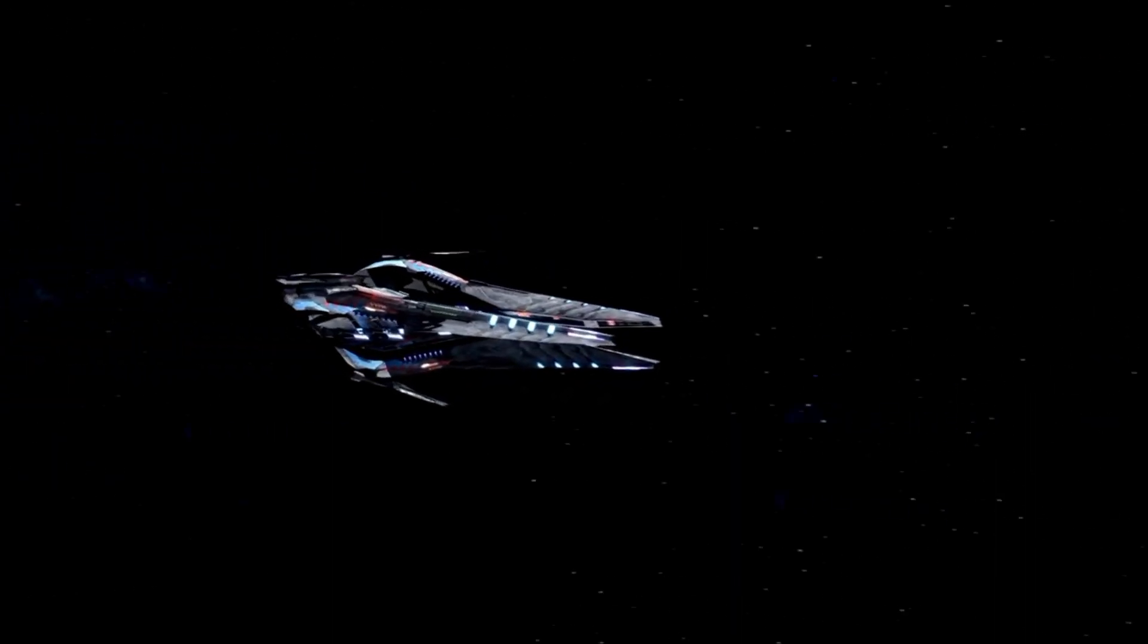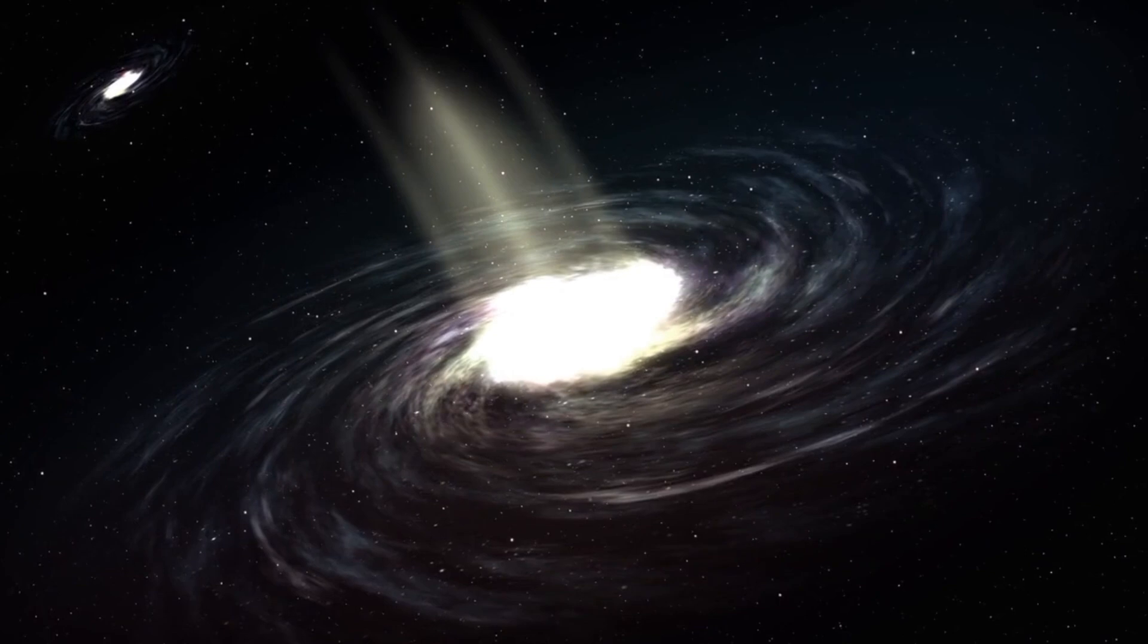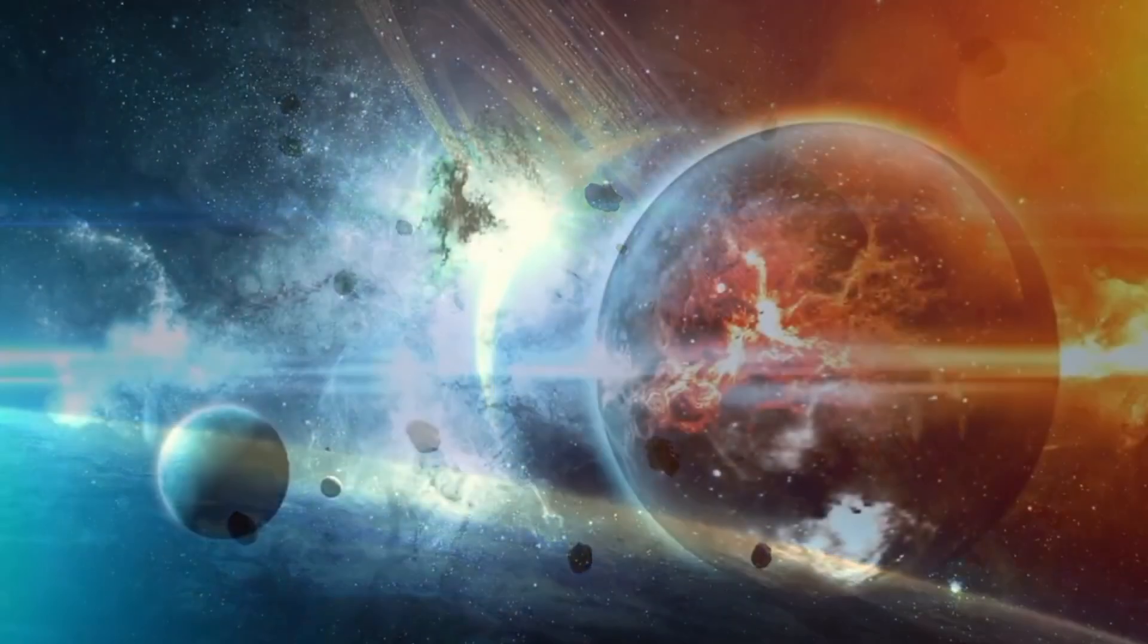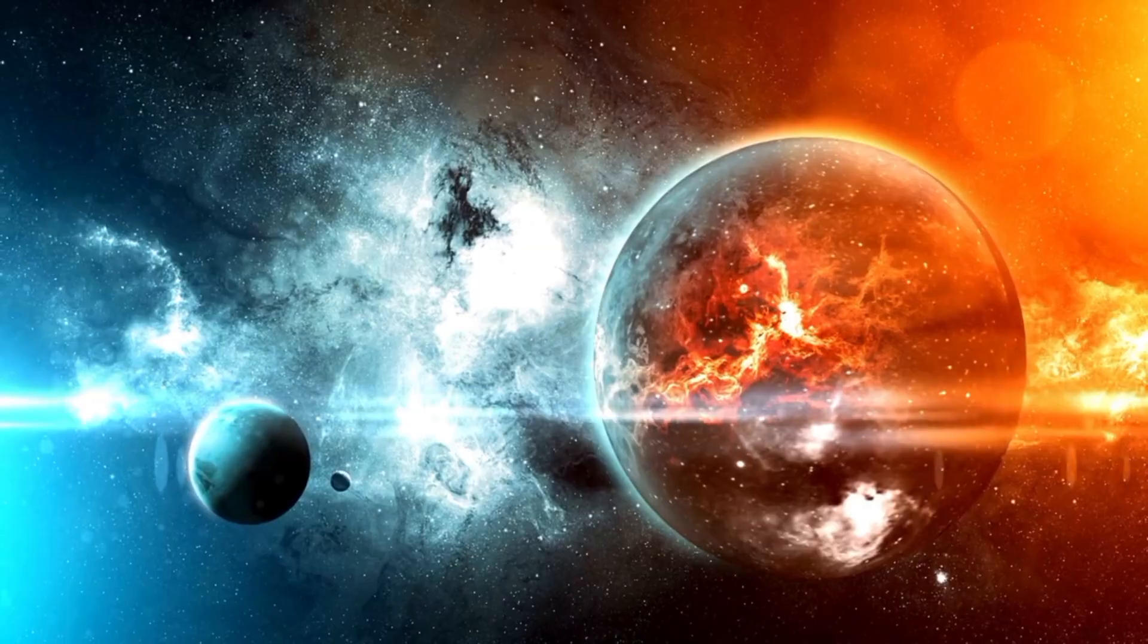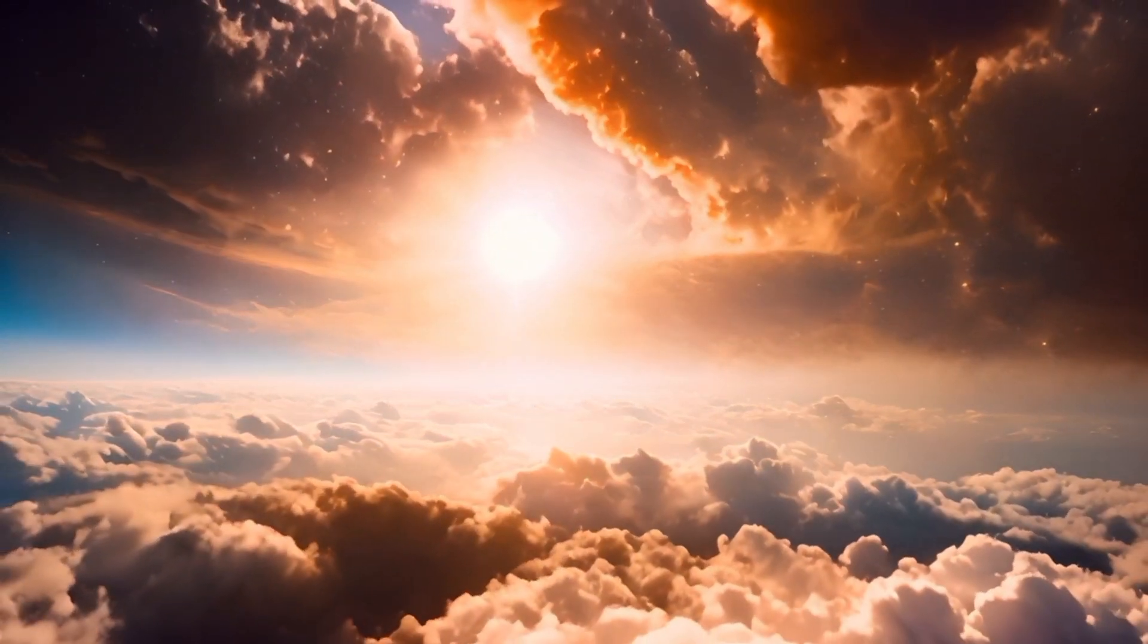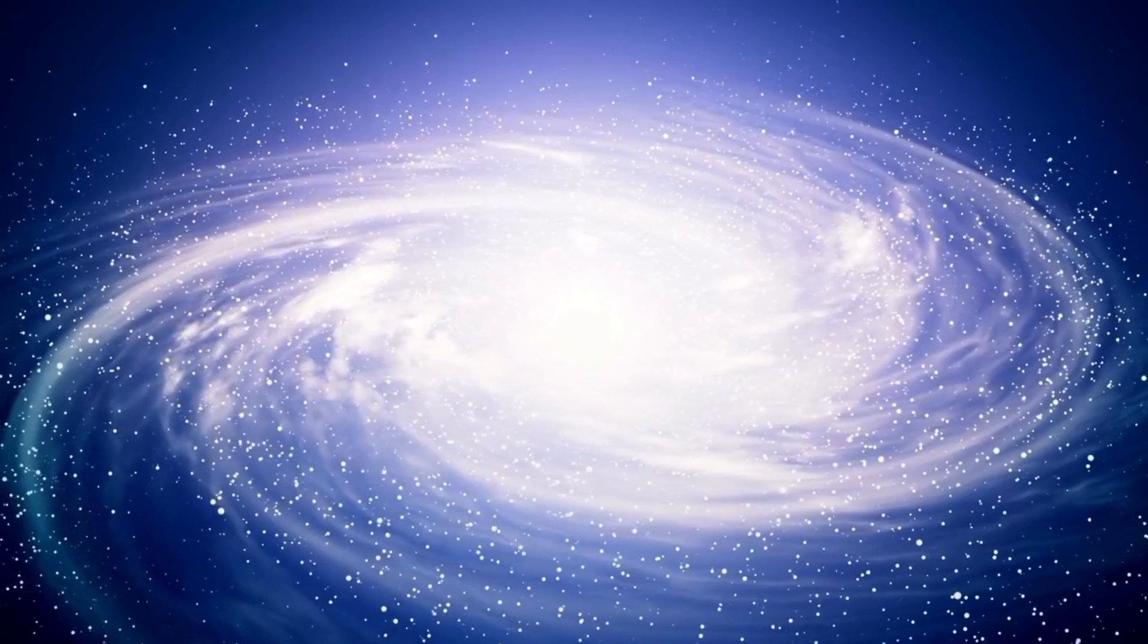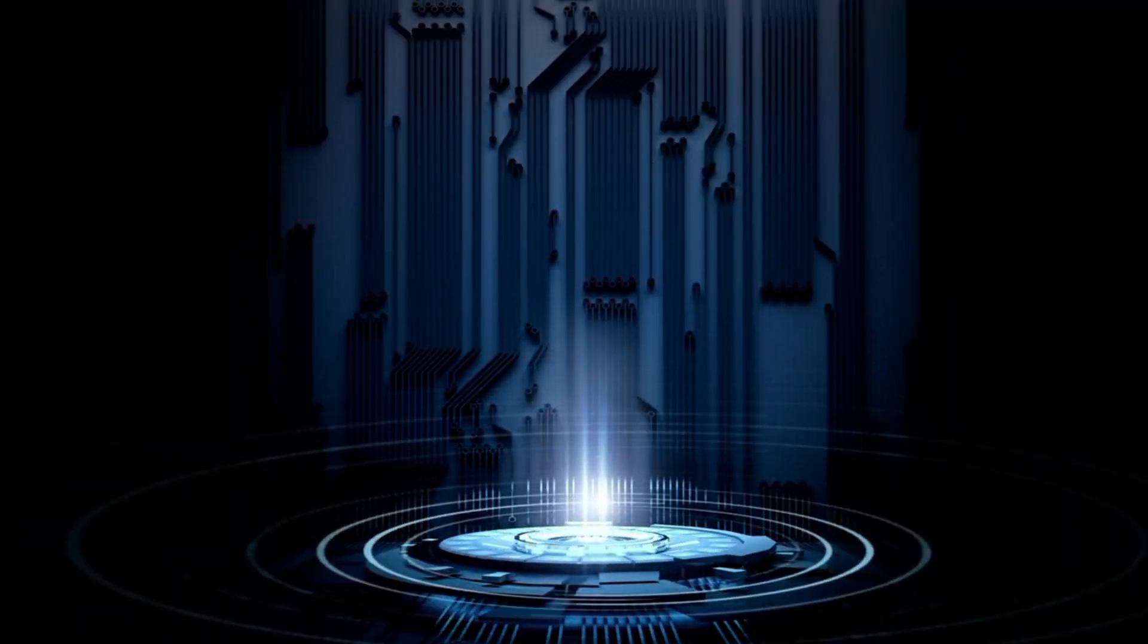Although some estimates place it farther away, Betelgeuse might be as close as 724 light-years from Earth. Determining the distances of red supergiant stars like Betelgeuse is a challenging subject in cosmology. Notwithstanding being far away, Betelgeuse is perhaps one of the brightest stars overhead due to its inherent brightness. It is multiple times brighter than the sun. Such brightness comes at a cost, as Betelgeuse's enormous energy quickly drains its fuel, hastening the end of its existence.